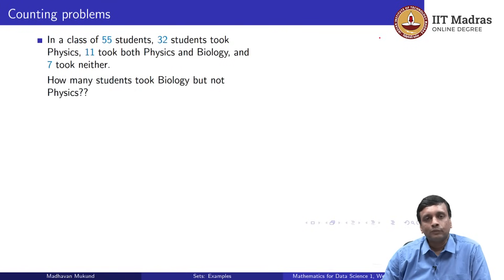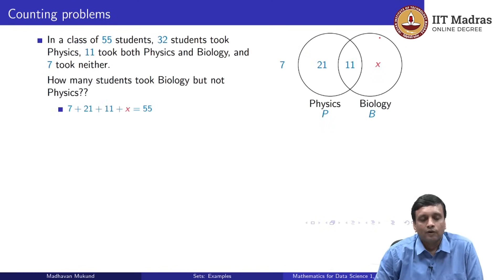Here is a variation where the data for the problem is given in a different way. Now, you are told the class strength 55, you are told that 32 students took physics, and of them 11 took physics and biology. And you are also told that 7 took neither. The question is, how many took biology, but not physics. Again, we draw our Venn diagram. And from the previous question, we know that we can put 11 in the intersection, because that is the number who took both. And since there are 32 who took physics, we can subtract out these 11 and say that P minus B is 21. And in the complement, we have 7.